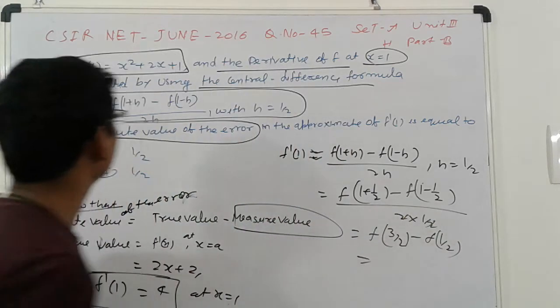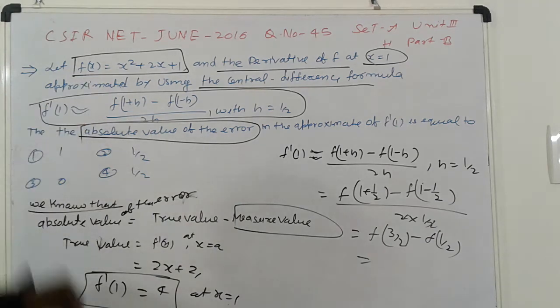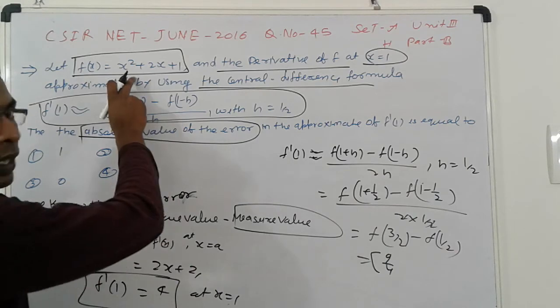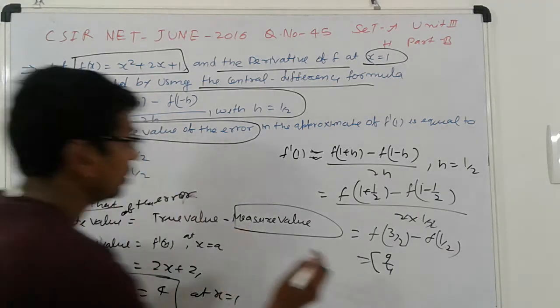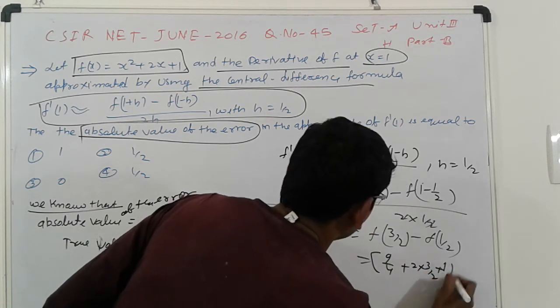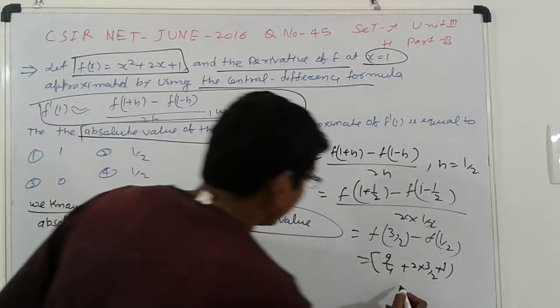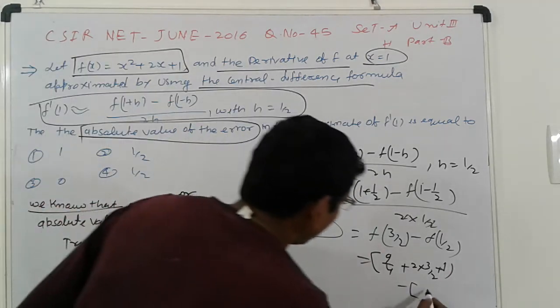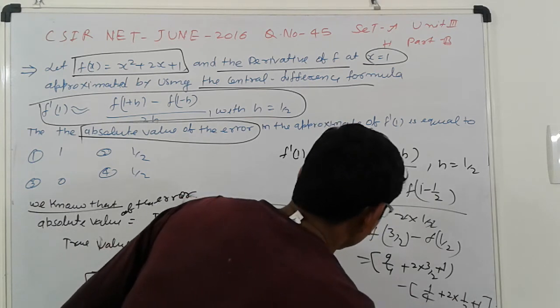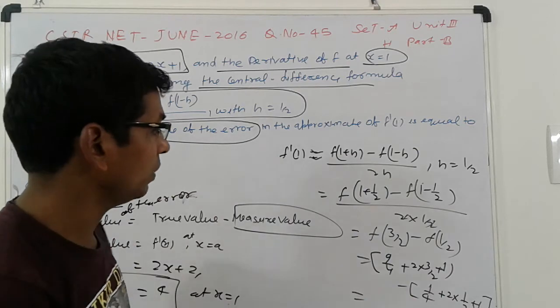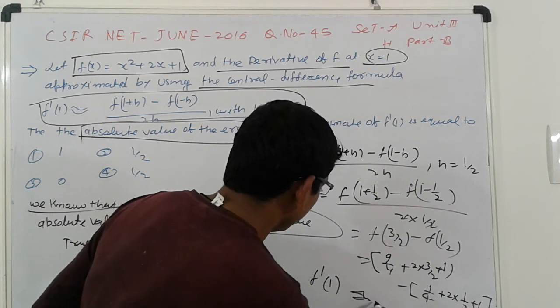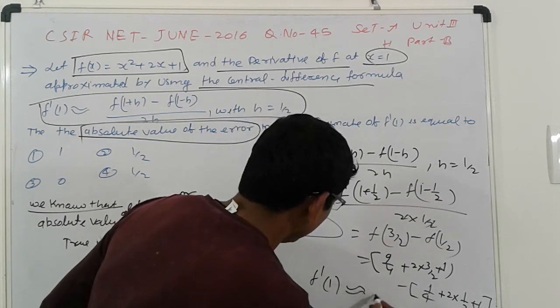So f(3/2) simplify this, so inside here 9/4. Put here f(3/2) so 9/4 + 2(3/2) + 1, here that is 1. Next minus 1/2 this is 1/4 + 2(1/2) + 1. Simplify again, so again we get this f'(1) here equal to 4.